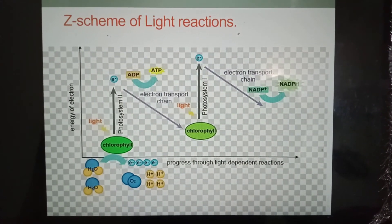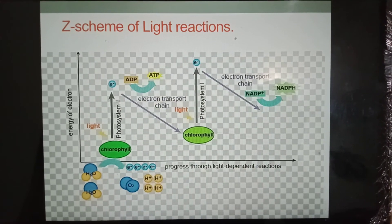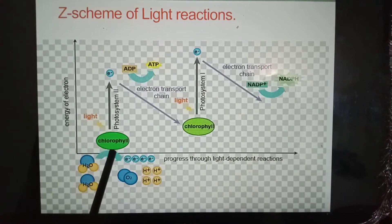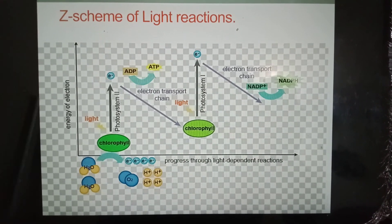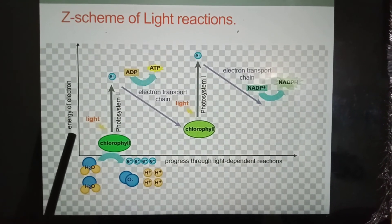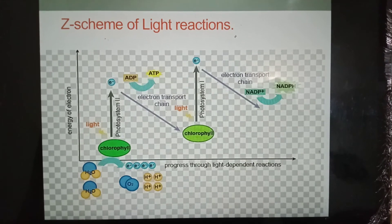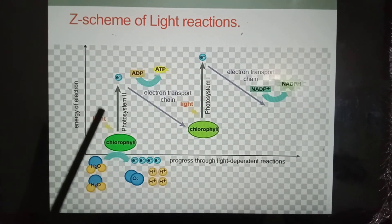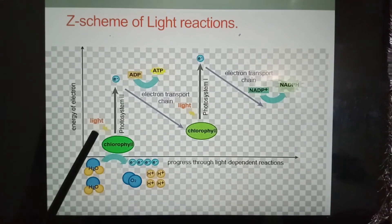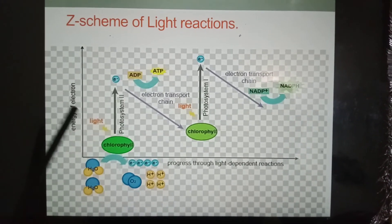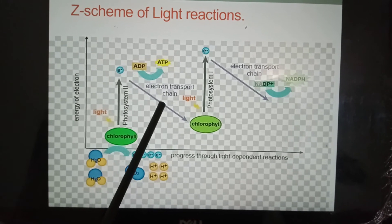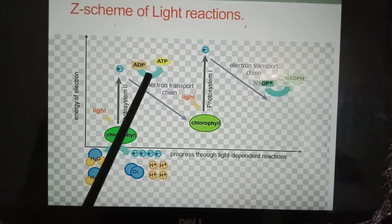Now I am going to discuss the Z-scheme of light reactions. When chlorophyll molecules absorb light, the energy level of electrons increases. Here you can watch the electrons are emitted. Electrons are passed to the electron transport chain to produce ATP.